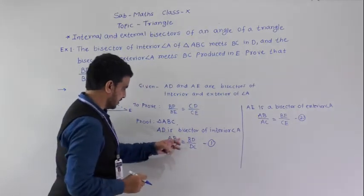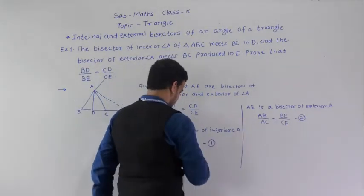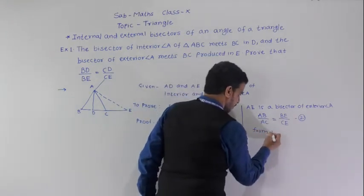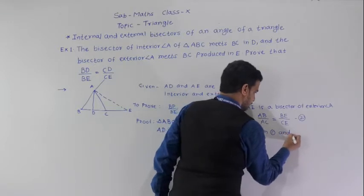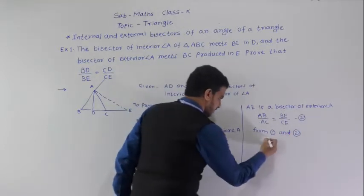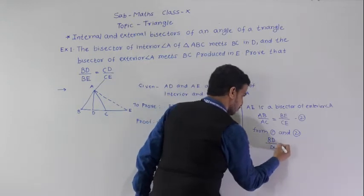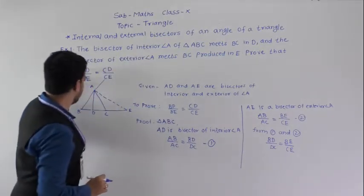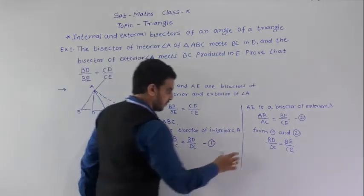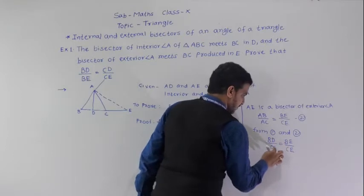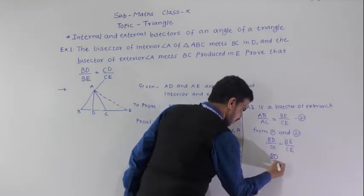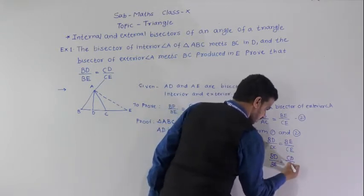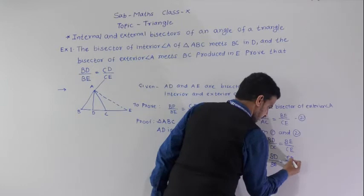From equations 1 and 2, the left-hand sides are both equal to AB/AC, so the right-hand sides are also equal. Therefore BD/DC = BE/CE. Rearranging, we get BD/BE = DC/CE, which is what we had to prove.